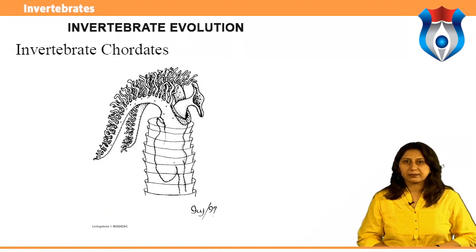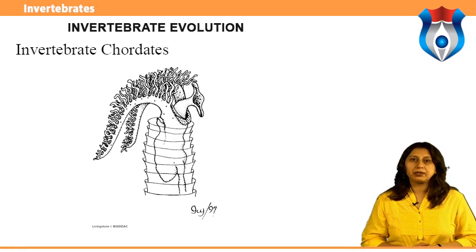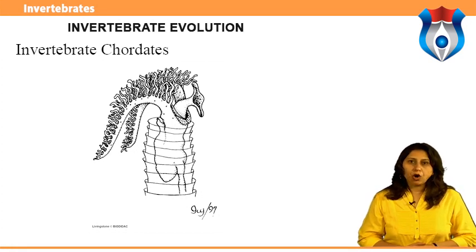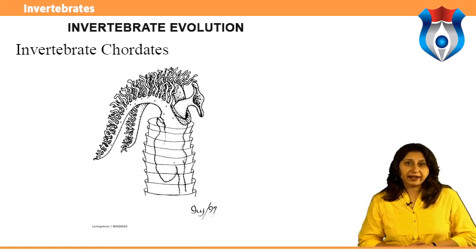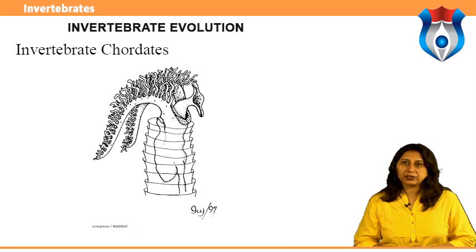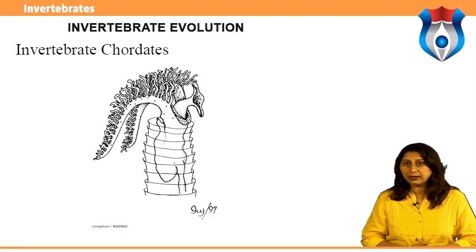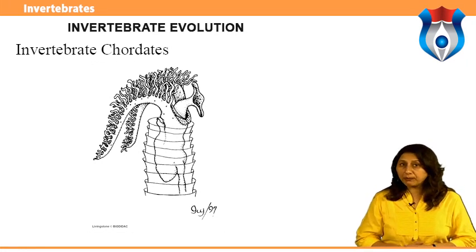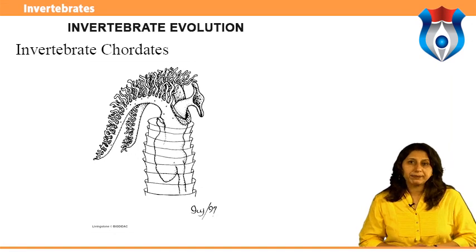Invertebrate chordates include pterobranch and enteropneust hemichordates — for example Tychodera australiensis and Balanoglossus sp. — which possess pharyngeal gill slits and a dorsal nerve cord. Pterobranchs such as Cephalodiscus gilchristi and C. agglutinans are remarkably similar to graptolites.